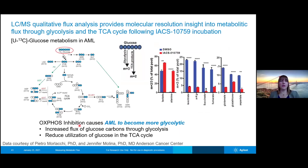For the glucose analysis, what we can see is that in cells in the presence of IACS, the labeled glucose is heavily funneled into lactate and alanine. So there's a huge increased flow of glucose through the glycolysis pathway, but also a reduction of the flow of glucose through the TCA cycle and all these TCA cycle intermediates.